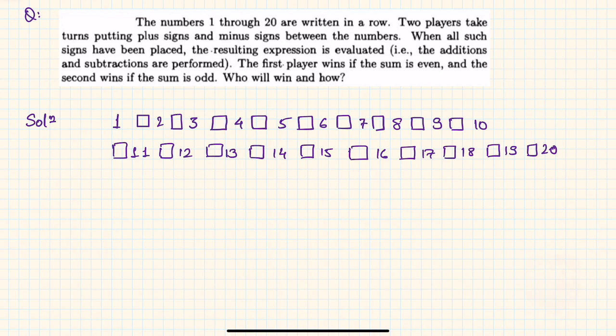Welcome friends, this is another question of the day problem. Today I posted this question which says the numbers 1 through 20 are written in a row. Two players take turns putting plus signs and minus signs between the numbers. When all such signs have been placed, the resulting expression is evaluated—that is, additions and subtractions are performed.